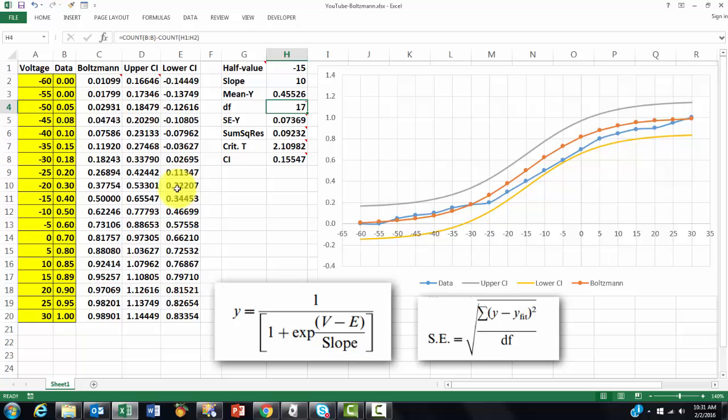So once we have done all of this, and we plot all of this, then you will see we don't have a good fit yet. Why not? Because the half value and the slope were guesses.